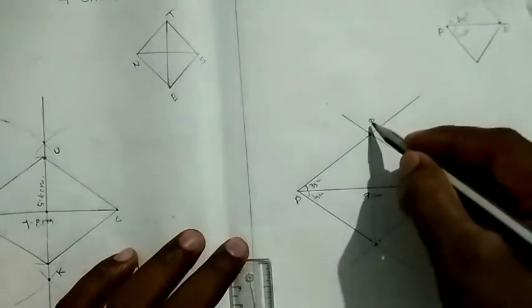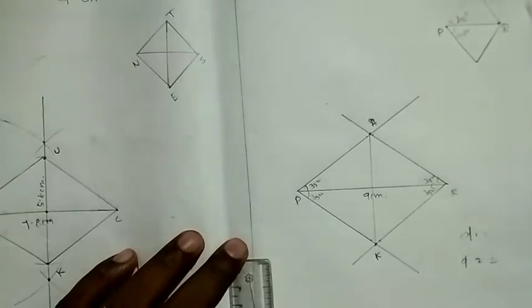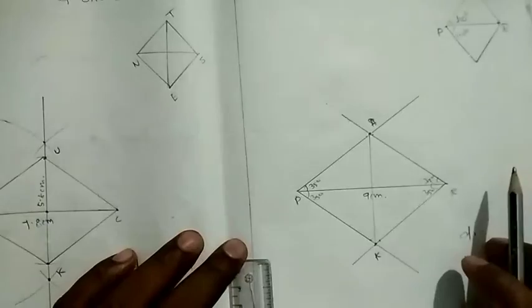Here we go, A, K. So, P, A, R, K. Now, the rhombus is formed.